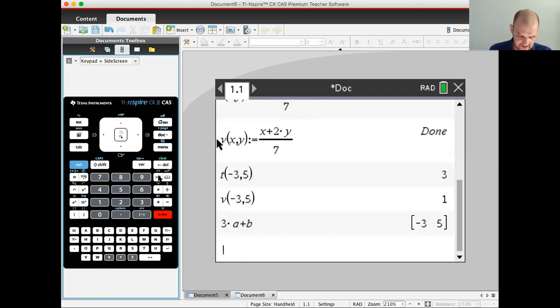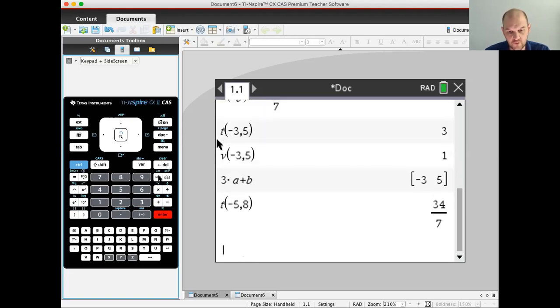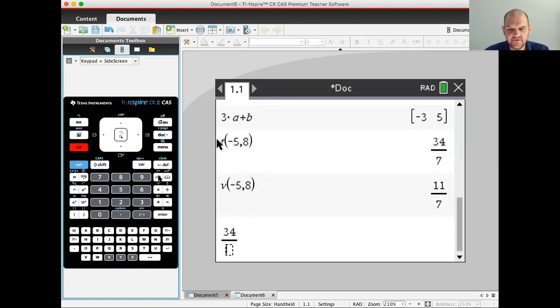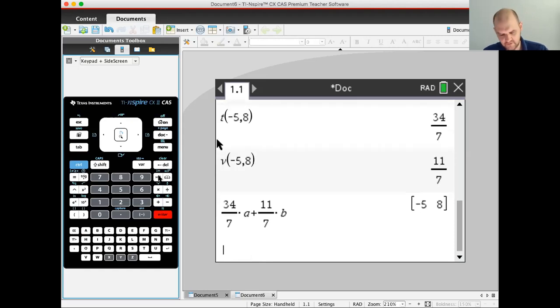So now the next thing in the notes says to try to use it for negative 5, 8. So if I do T of negative 5, 8. And if I do V of negative 5, 8, I get that. So if I do 34 sevenths times A. So you start at the origin, and you move in the direction of A, and you scale it by 34 sevenths. And then once you get there, you move in the direction of B, but you scale it by 11 sevenths, you should end up at negative 5, 8, which you do. So I'm going to write down that 34 over 7A plus 11 over 7B equals negative 5, 8.